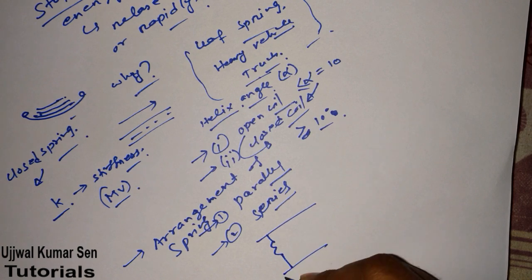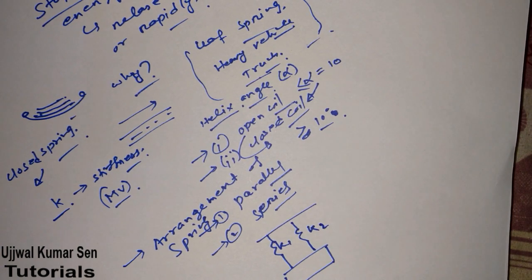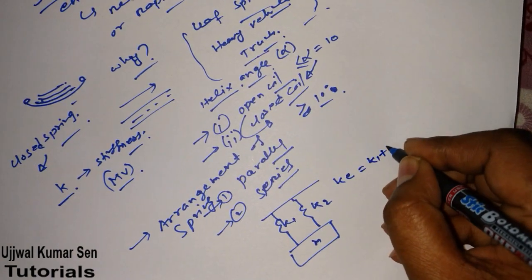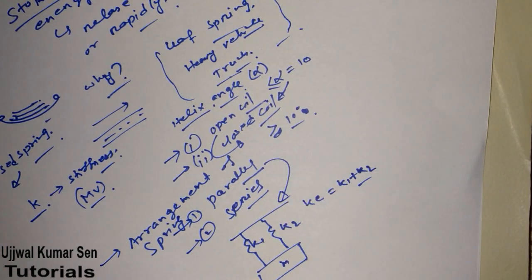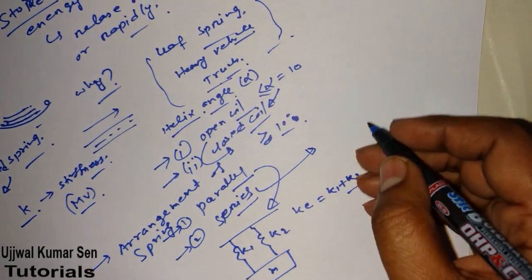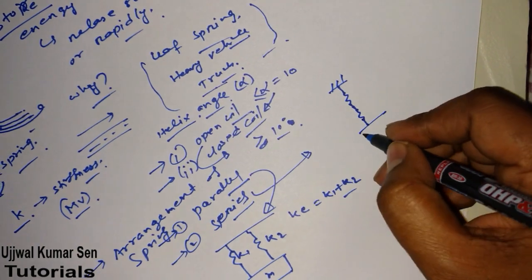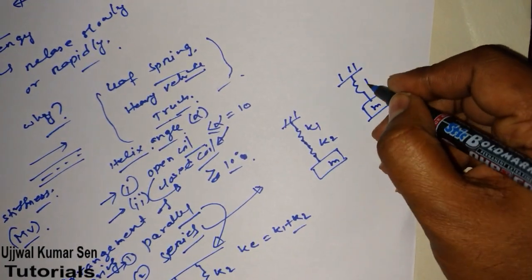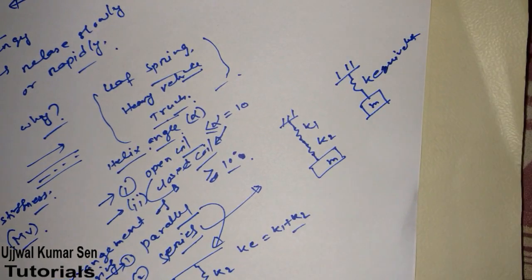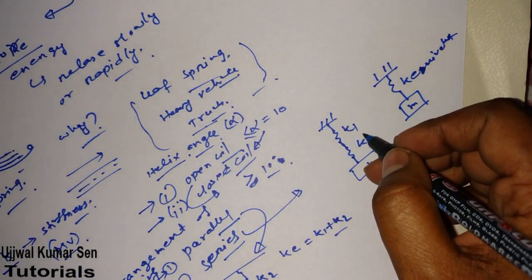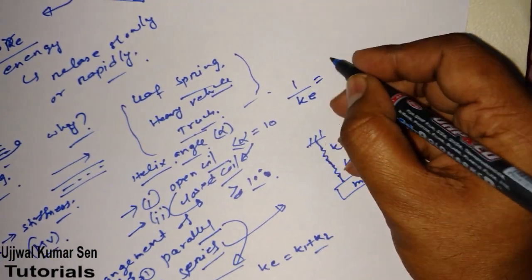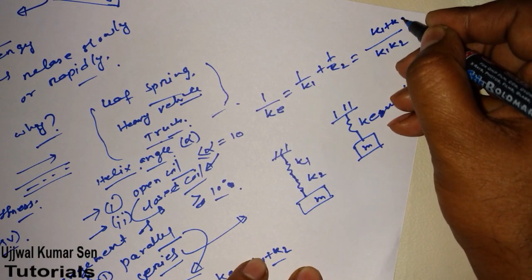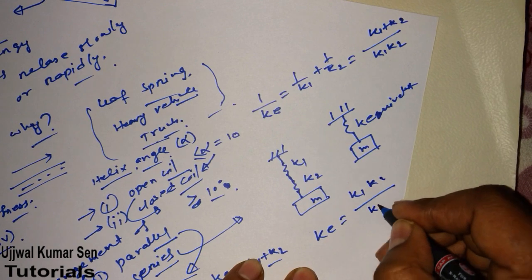Suppose we have stiffness k1 and stiffness k2 with a mass. If two springs are in parallel, the equivalent stiffness is k_eq = k1 + k2. For the series case, suppose we have a fixed end with k1 and k2 in series and a mass. To find the single equivalent stiffness k_eq in series, we use: 1/k_eq = 1/k1 + 1/k2, which gives k_eq = k1·k2 / (k1 + k2).